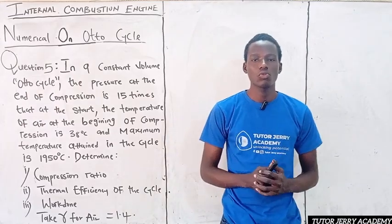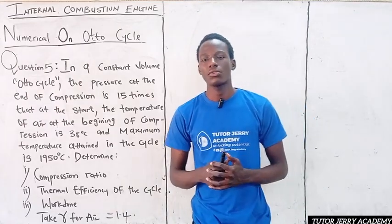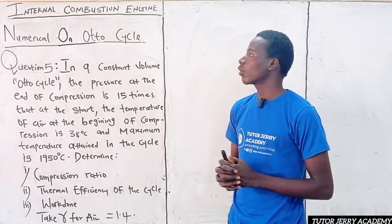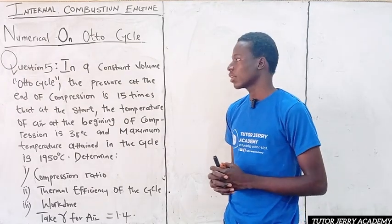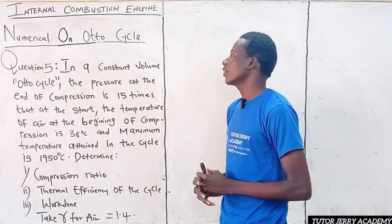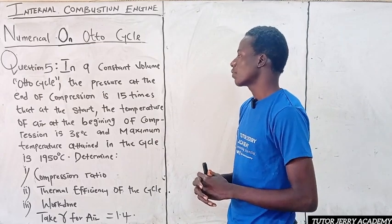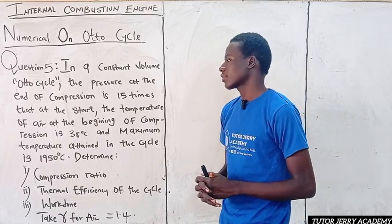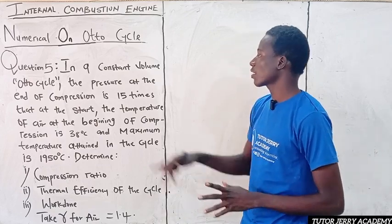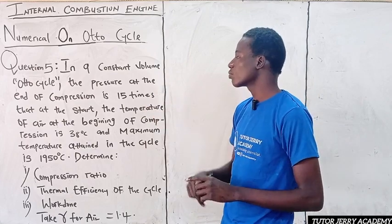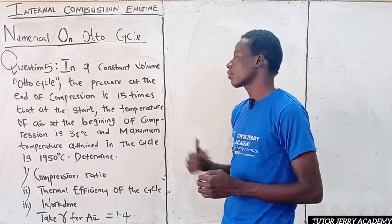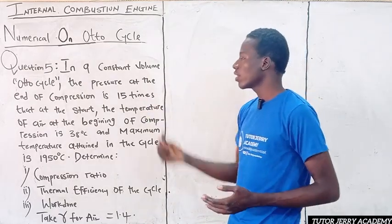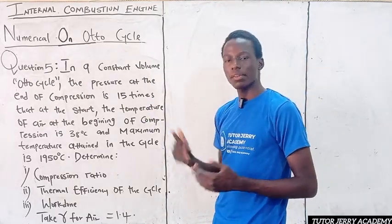Good day and welcome to our class for today. We are going to be looking at numerical number 4 on the Otto cycle. The question is as follows: in a constant volume Otto cycle, the pressure at the end of compression is 15 times that at the start of compression. So P2 equals 15 times P1.